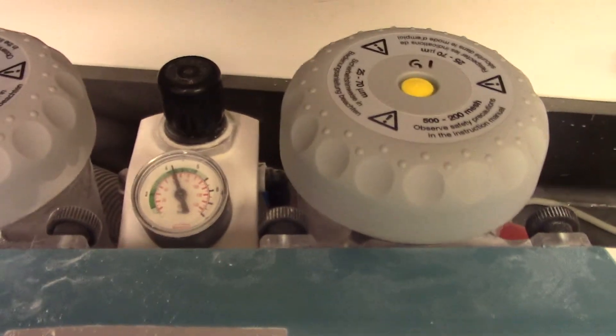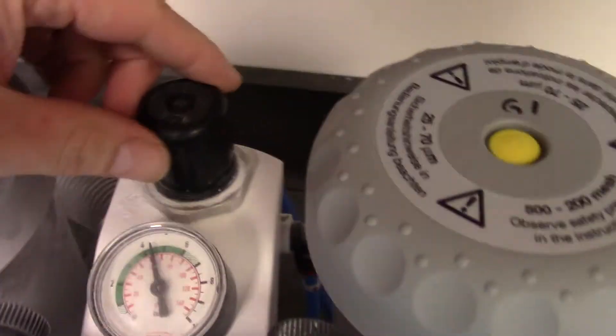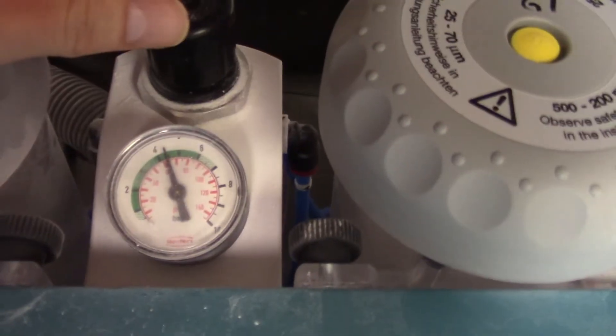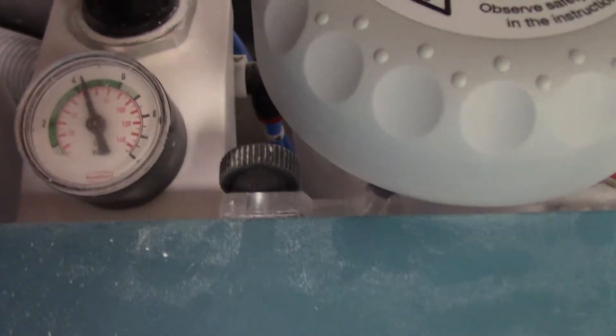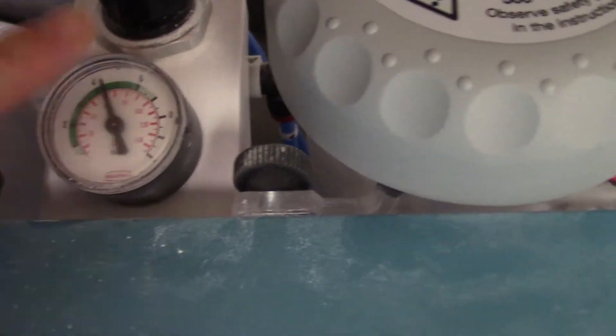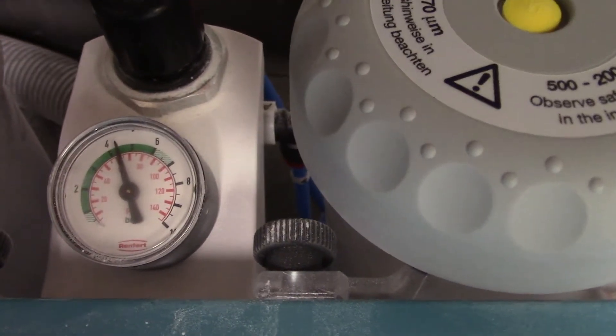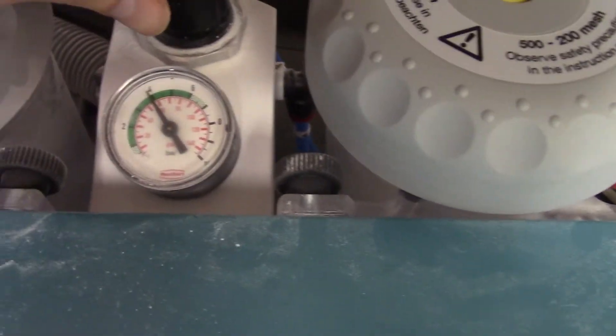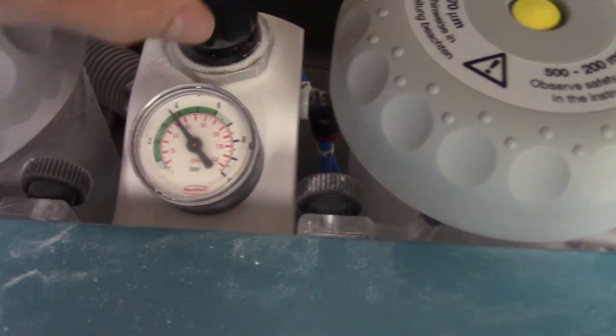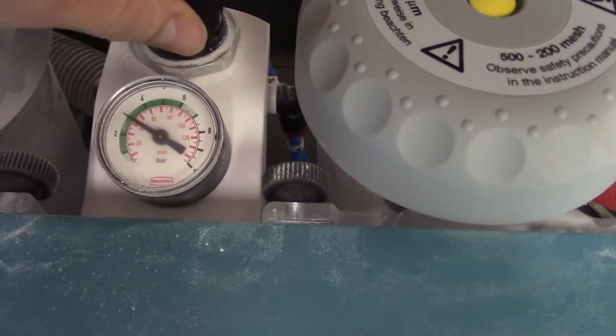The other thing that we can do here is we can adjust the pressure. Let me turn this off so it's easier to hear. But the way we adjust the pressure is from this nozzle back here. So right now the pressure is reading right around 4, which is the same thing as 60 psi. So that's 4 bar or 60 psi. That's pretty high. Usually we want it around 2. So in order to change the pressure, we've got to turn this nozzle right here until it reads down to 2.